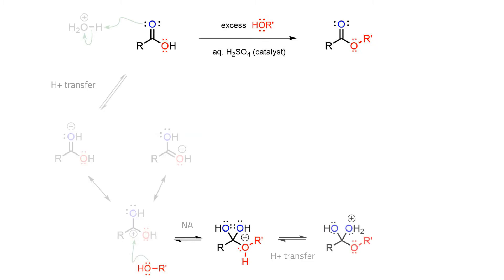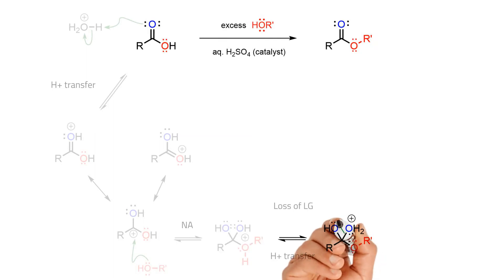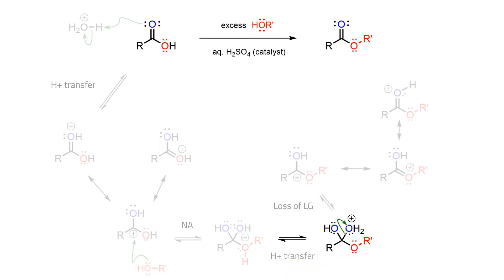Proton transfer to one of the OH groups sets up a tetrahedral intermediate with a water leaving group attached. Loss of water from the intermediate then gives the conjugate acid of the ester, which is stabilised significantly by delocalisation.